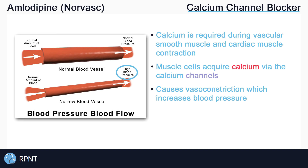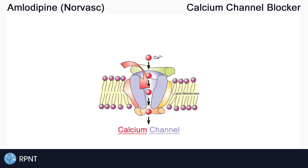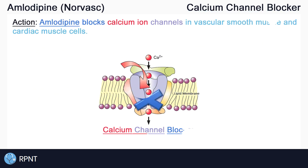Calcium is required during muscle contraction, which would cause our blood vessels to constrict. Calcium also increases the contractility of cardiac muscle cells which are in the heart. Amlodipine, a calcium channel blocker, prevents calcium from entering the muscle cells, decreasing the vascular smooth muscle and cardiac muscle contraction. Amlodipine exerts a much stronger effect on vascular smooth muscle than it does on cardiac muscle.